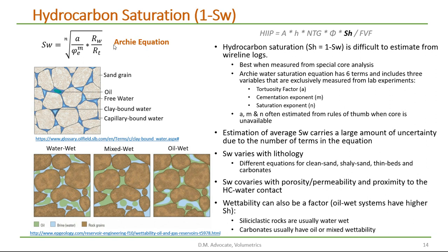If we look at the Archie equation, for example, it contains six terms: the resistivity of water, the true resistivity, the effective porosity, A, M, and N. A, M, and N can only be measured from core rock — we're talking about tortuosity, cementation, and saturation exponent. The estimation of water saturation carries a large amount of uncertainty due to the large number of terms in the equation.